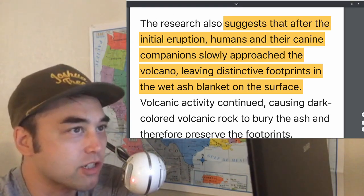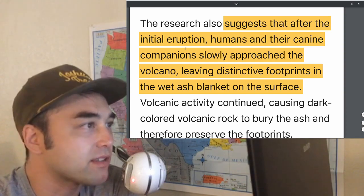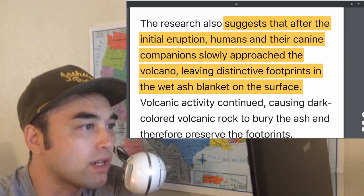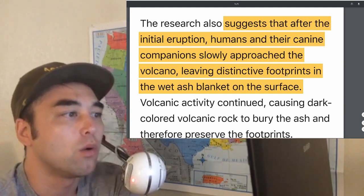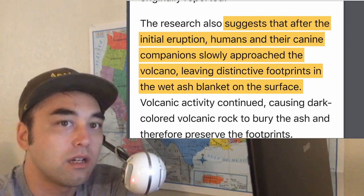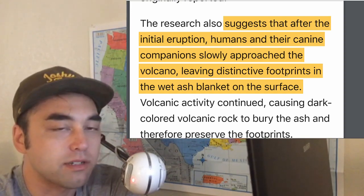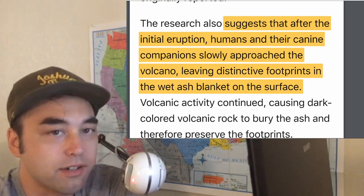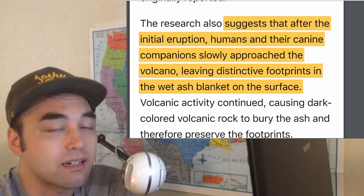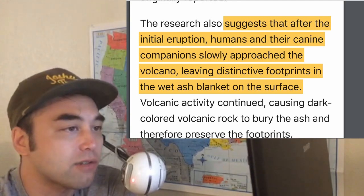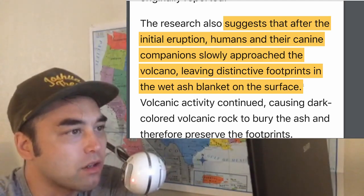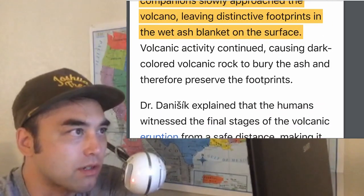The research also suggests that after the initial eruption, humans and their canine companions slowly approached the volcano, leaving distinctive footprints in the wet ash blanket on the surface. When the volcanic activity was tapering off, humans, being naturally curious, approached with caution. They had domesticated dogs. And that's where the footprints came from.